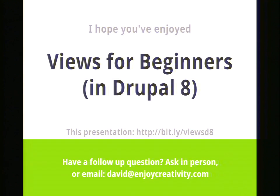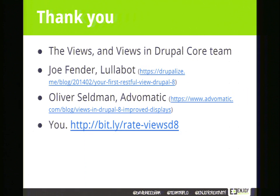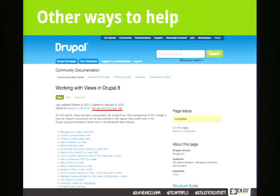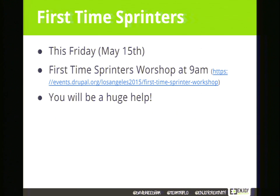Question: Why does a field only have access to fields listed above it — why can't you just add the username to display on the title instead of having to reorder? Answer: It has to do with the rendering process — fields render in order, so a field can only reference fields that come before it. Semantically, it makes sense to put the meta information (username) on the primary piece of content (the title), but you could do it either way and it should work.